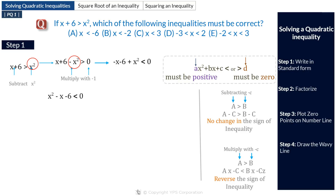Now the inequality is in standard form. In step 2, we factorize: x squared minus x minus 6 factors as (x minus 3)(x plus 2). So our inequality becomes (x minus 3)(x plus 2) less than 0.